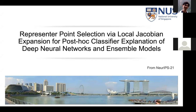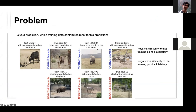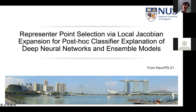It's a very long title. So picking out keywords: 'representer point selection' means when you do a test, you pick up some representative training data that contribute positively or negatively. 'Local Jacobian expansion' is the mathematical formula used when deriving the kernel function. 'Post-hoc' means you do the analysis after you train the model. 'Deep neural network' is the network model, and 'ensemble models' refers to the fact that they tested on datasets including one based on XGBoost.